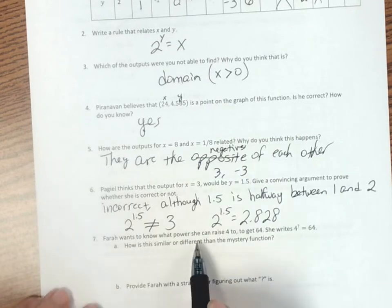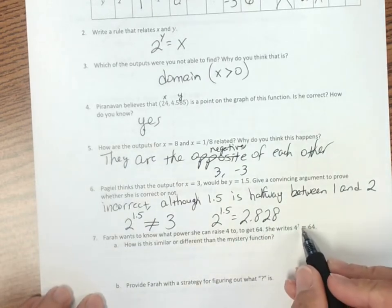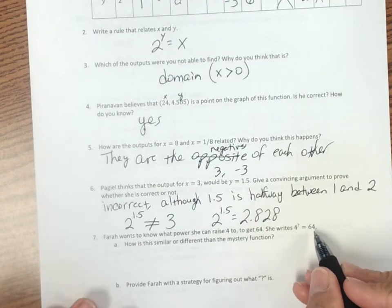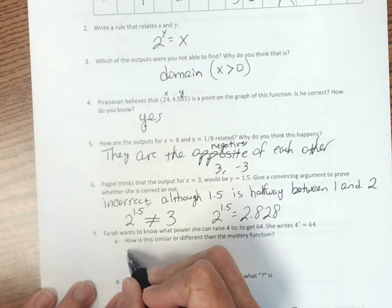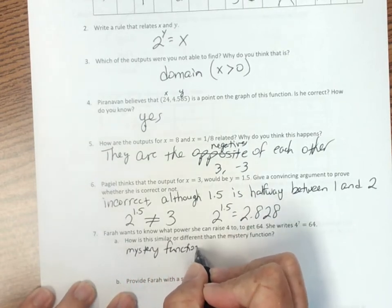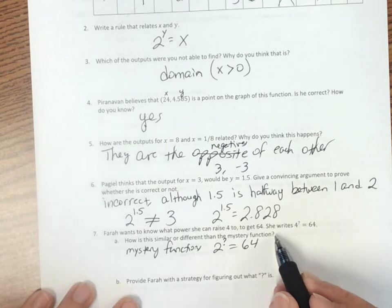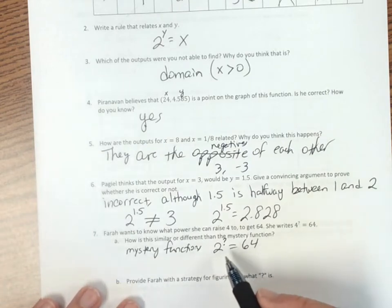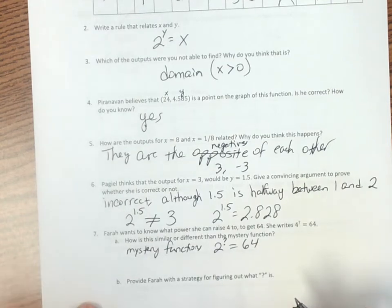And Farrah wants to know what power she can raise 4 to to get 64. So she writes 4 to the sum power equals 64. How is this similar or different to the mystery function? Well, the mystery function is 2 to the sum power would say 64. But in this case, we're looking to 4 raised to some power is 64. So it is quite similar. But how can that help us?